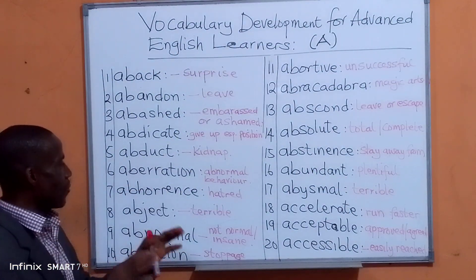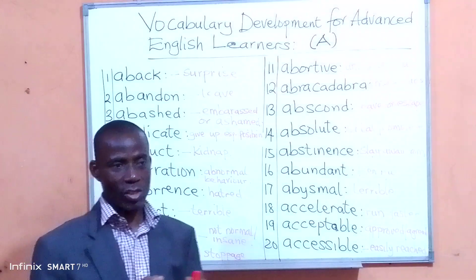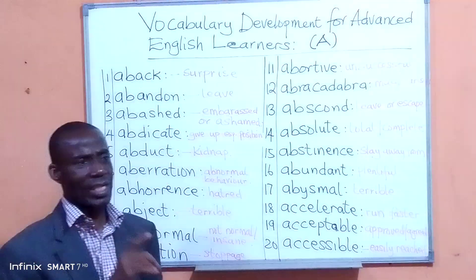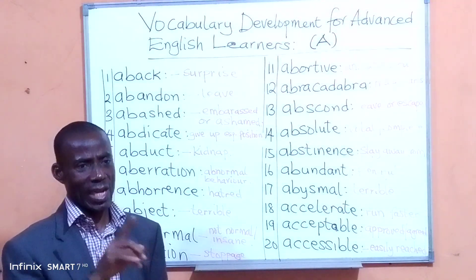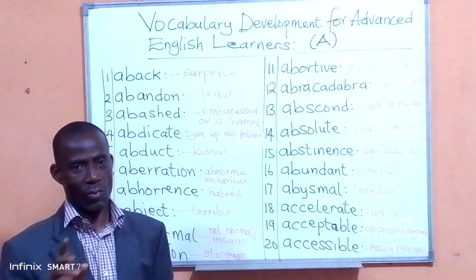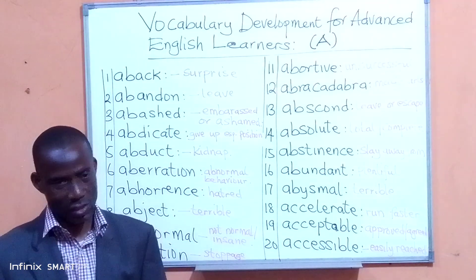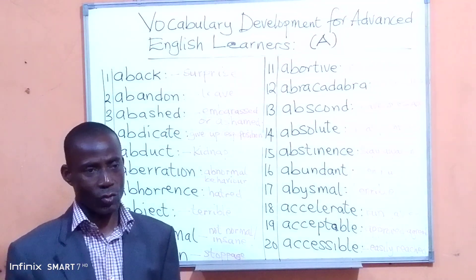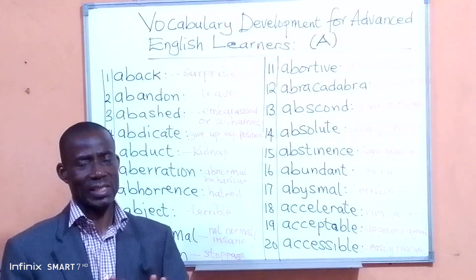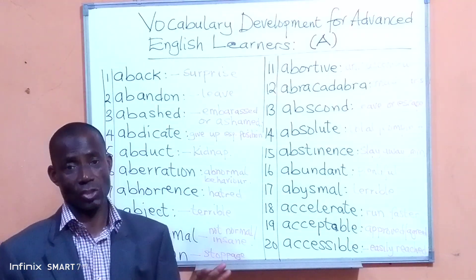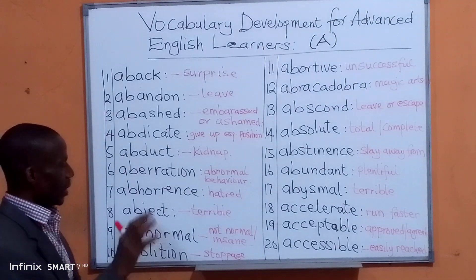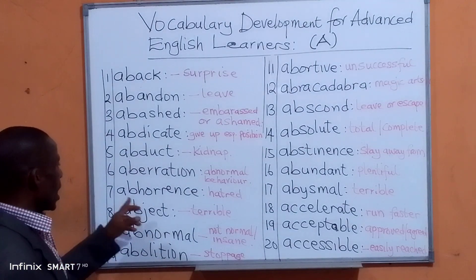Aberration means abnormal behavior — behavior that is not accepted. For example: 'This particular incident was an aberration. What that man did was an aberration.' It is something strange, not normal. So that behavior was an aberration.